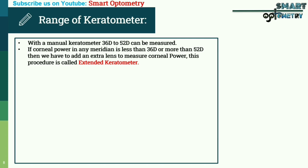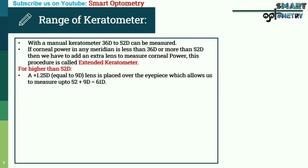This procedure is called extended keratometry. These extra lenses are placed before the eyepiece, not in front of the patient's eye. For higher than 52 diopters, a plus 1.25 diopter lens — which is equal to 9 diopters — is placed over the eyepiece, which allows us to